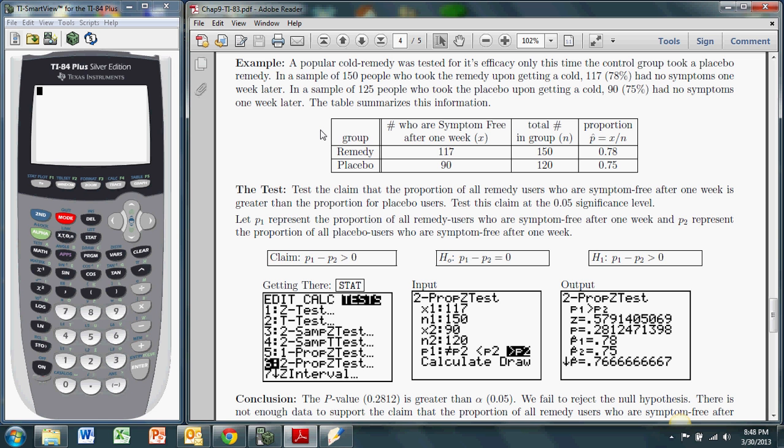So here we have some data for a popular cold remedy. It looks at how many people from each group were symptom free in one week. In the first group, there's 150 people who had a cold, and one week later, 117 of them were symptom free. In the control group that took the placebo, there's 120 in that group, and 90 of them were symptom free one week later.